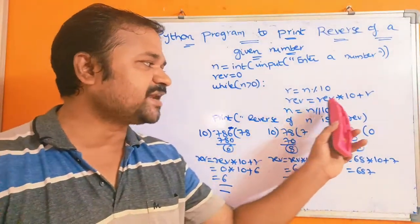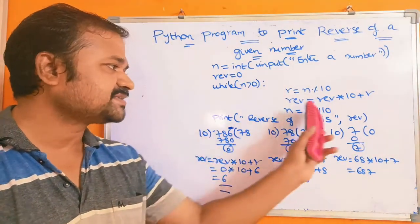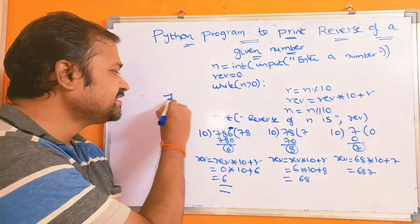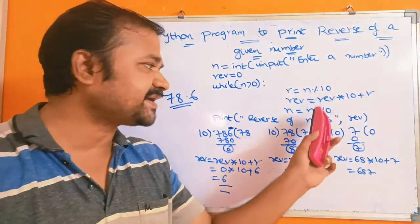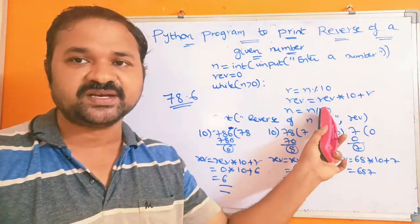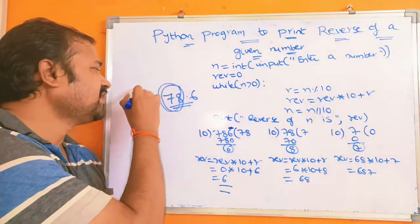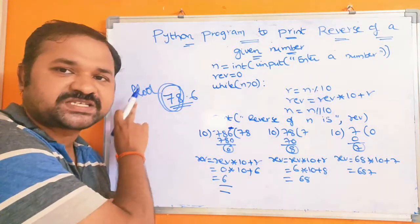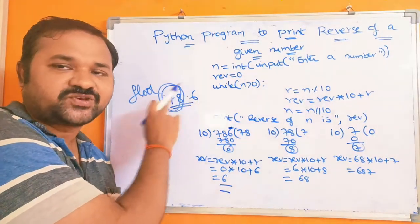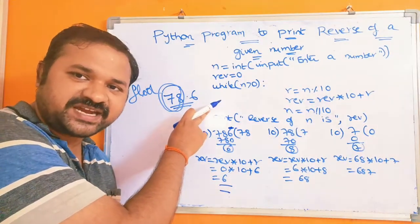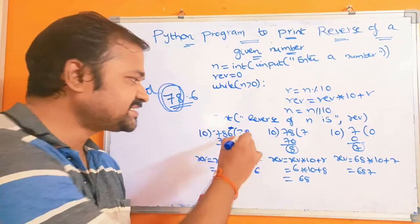Next, n = n // 10. The current value of n is 786. 786 divided by 10 would normally give 78.6, but this is integer division (floor division), so the floor function is applied. The value less than 78.6 is 78, so n becomes 78 in the next iteration.